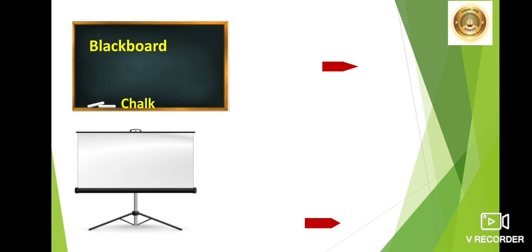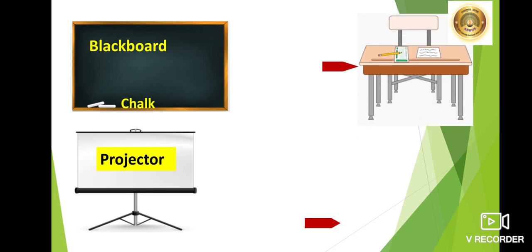Now see the 2nd picture. Which picture is this? Yes, it is a picture of a projector. Now you know what is the use of a projector? The teacher shows you short films, songs, stories on the projector. Now you know where the teacher sits? Yes, the teacher sits on a chair and a table is besides her to keep her things. So it is a teacher's table.